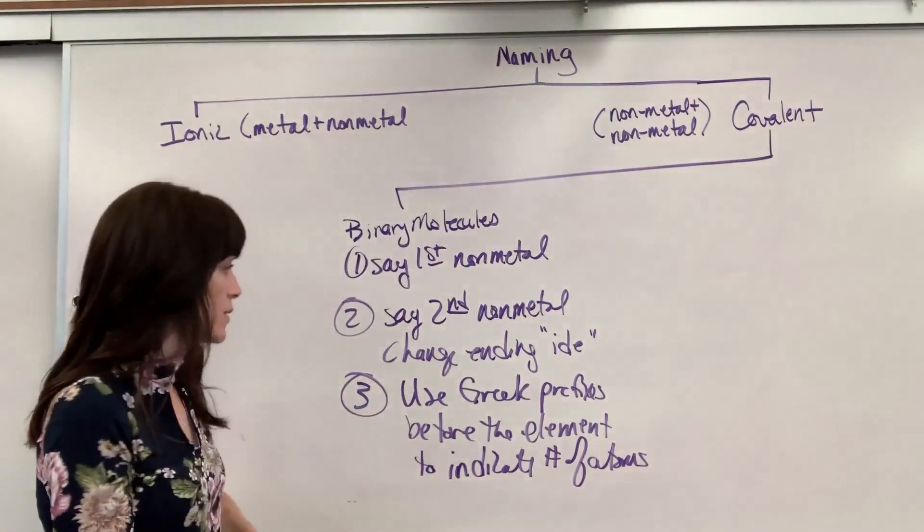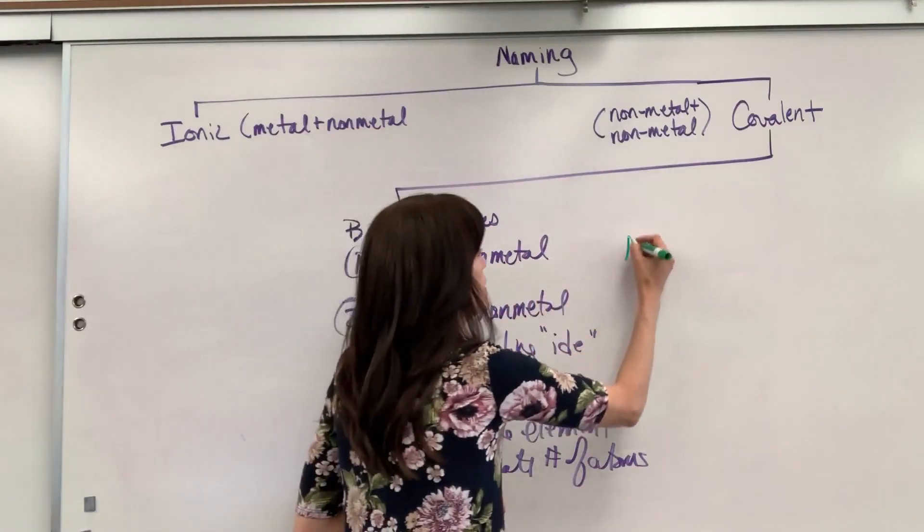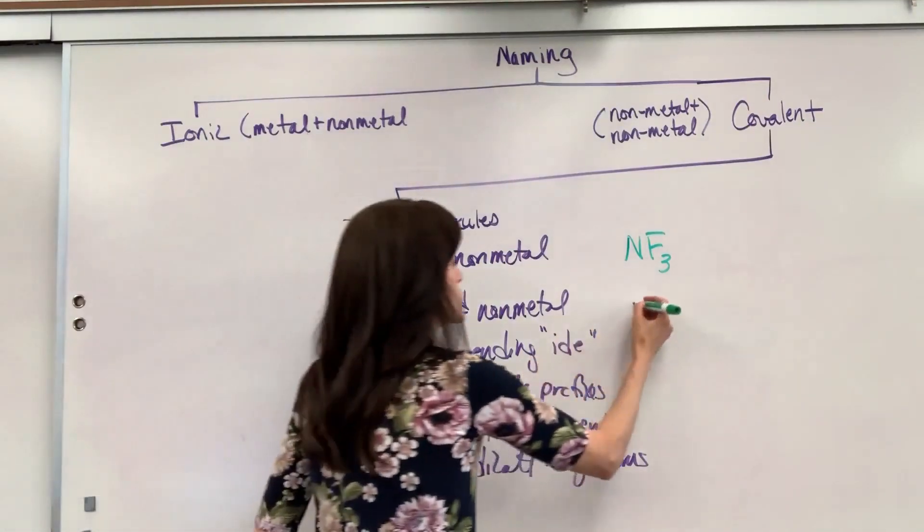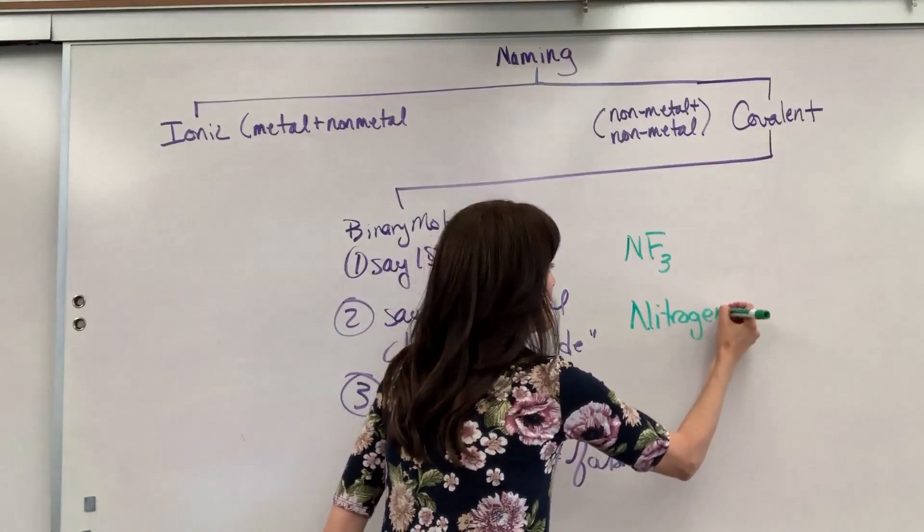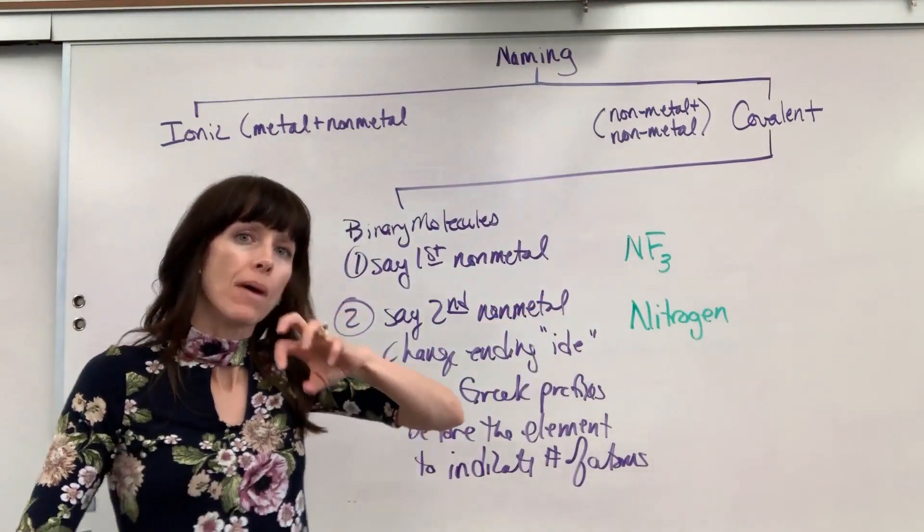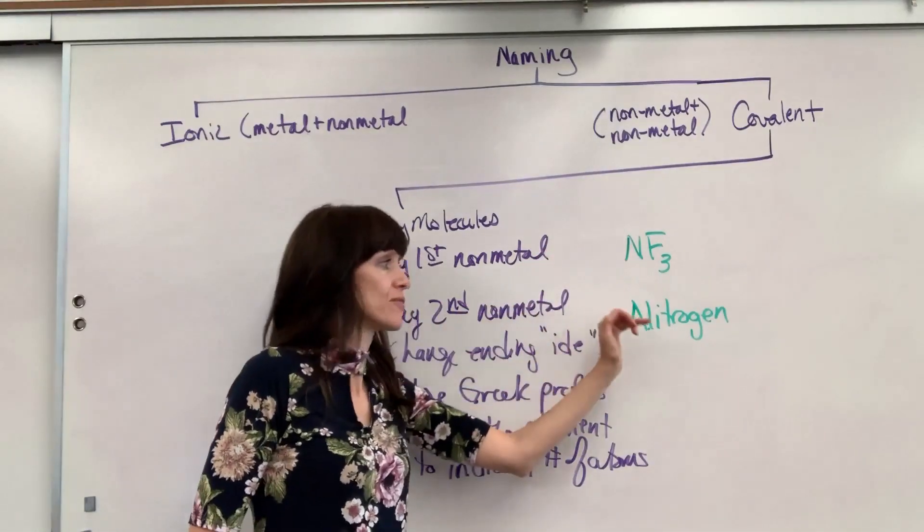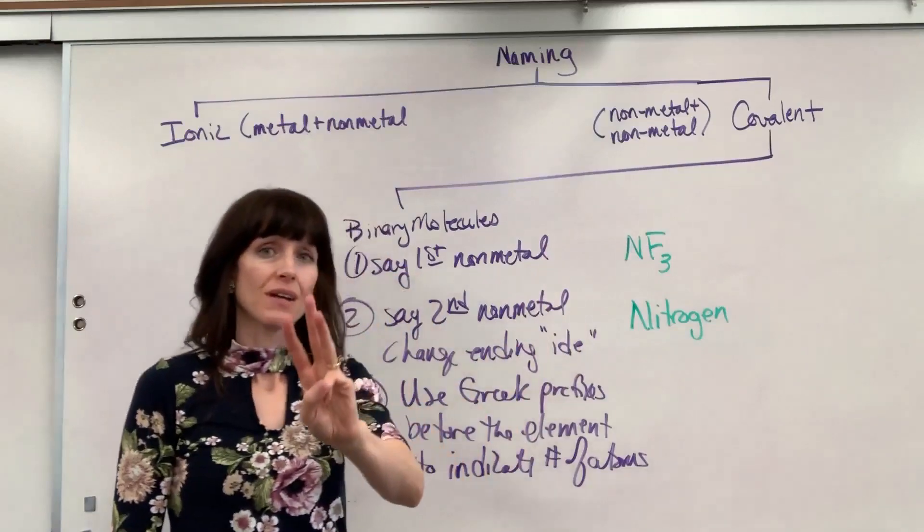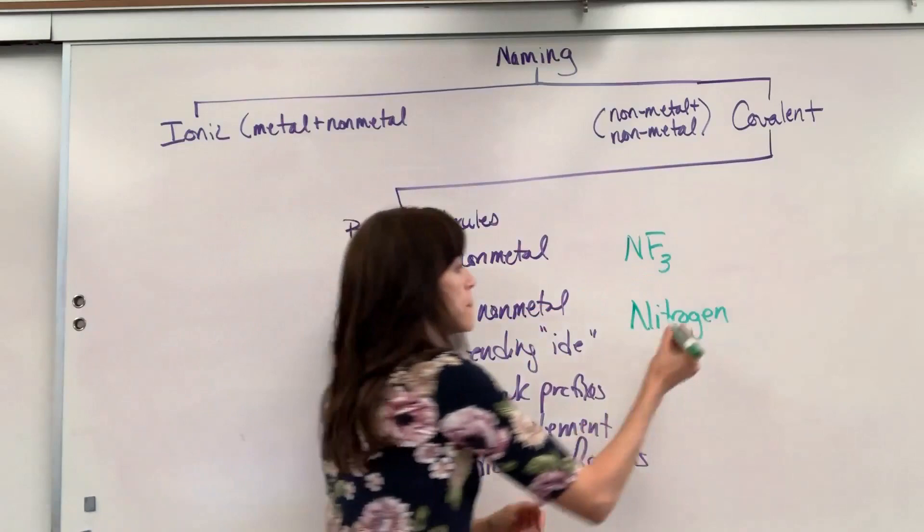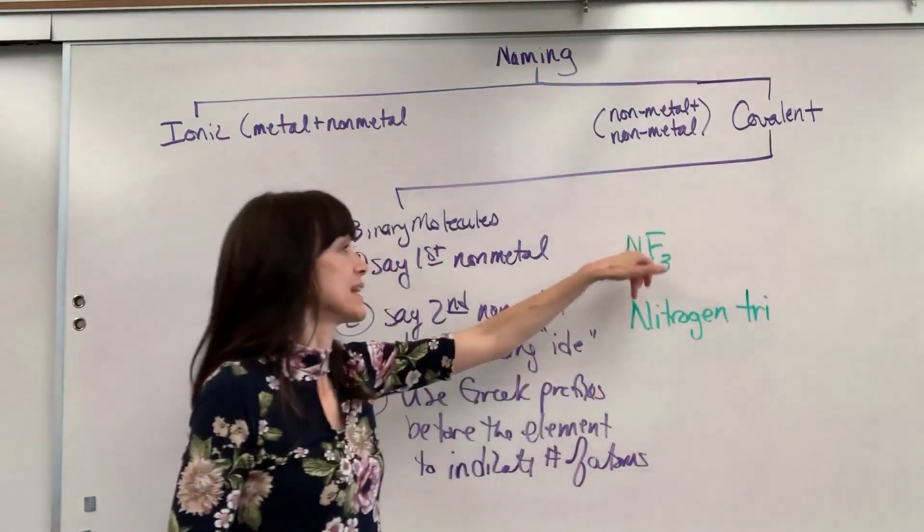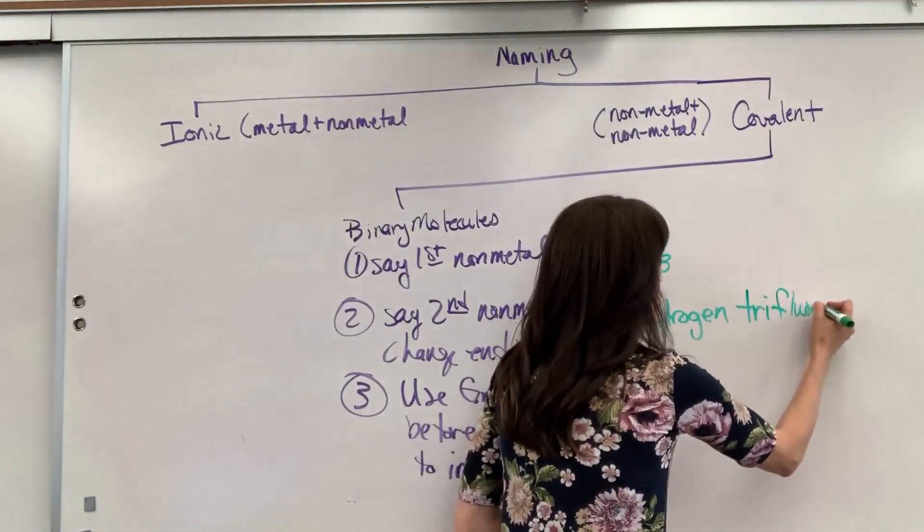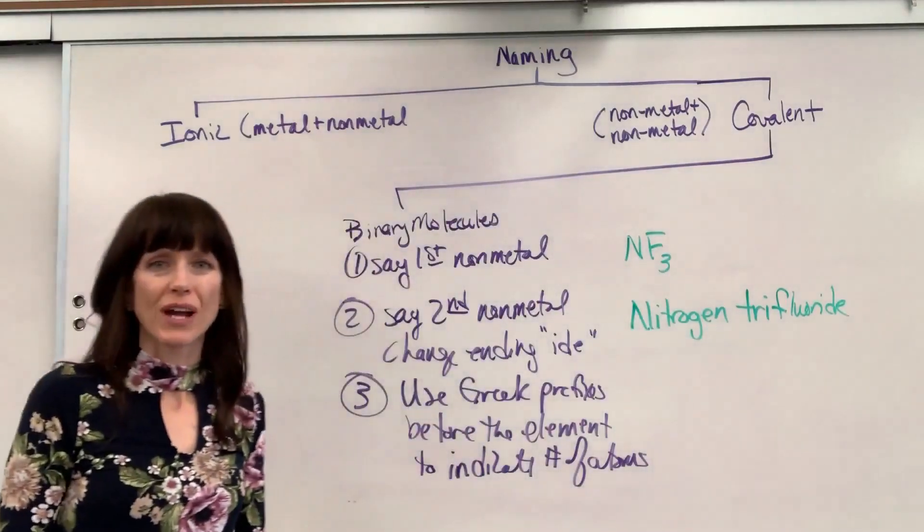So let's begin with NF3. So I'm going to say the first non-metal, nitrogen. Now check it out. I have one N, so I didn't have to say mononitrogen because it's the very first element. Now I've got three of the fluorines. So I'm going to put the number first, tri, and then I take that second element and change the ending to ide. So this is nitrogen trifluoride.